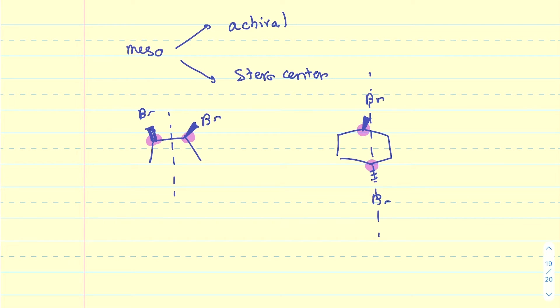These carbons are not stereocenters. Remember, in order for something to be a stereocenter, it needs to be an sp3 carbon connected to four different things. Now the purple highlighted carbons are connected to a hydrogen and a bromine, but these two ring carbons or ring attachments are the same.